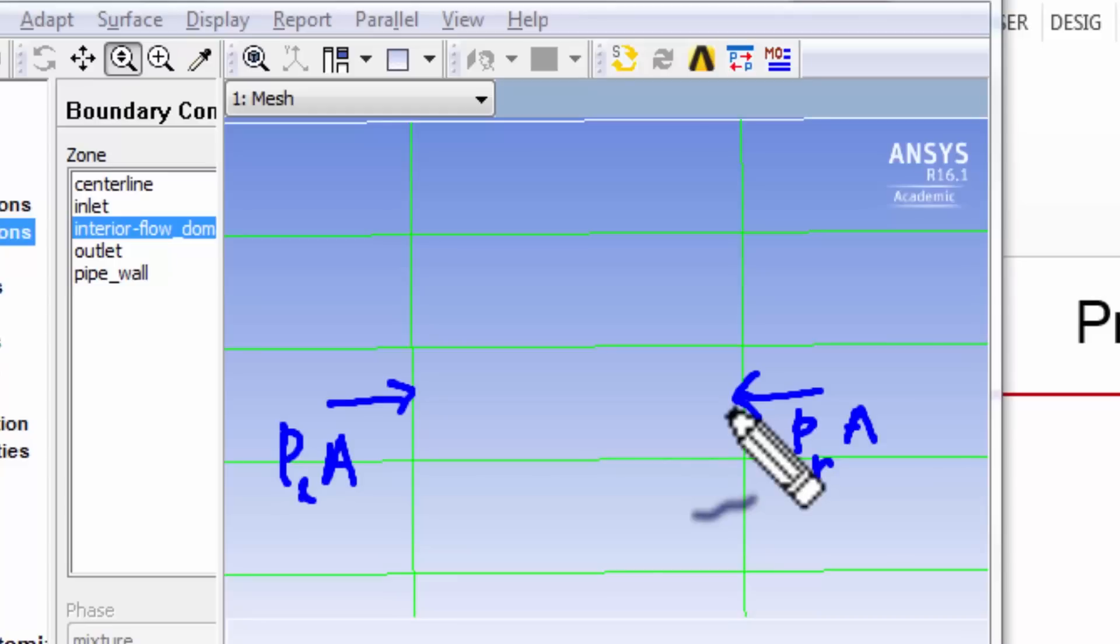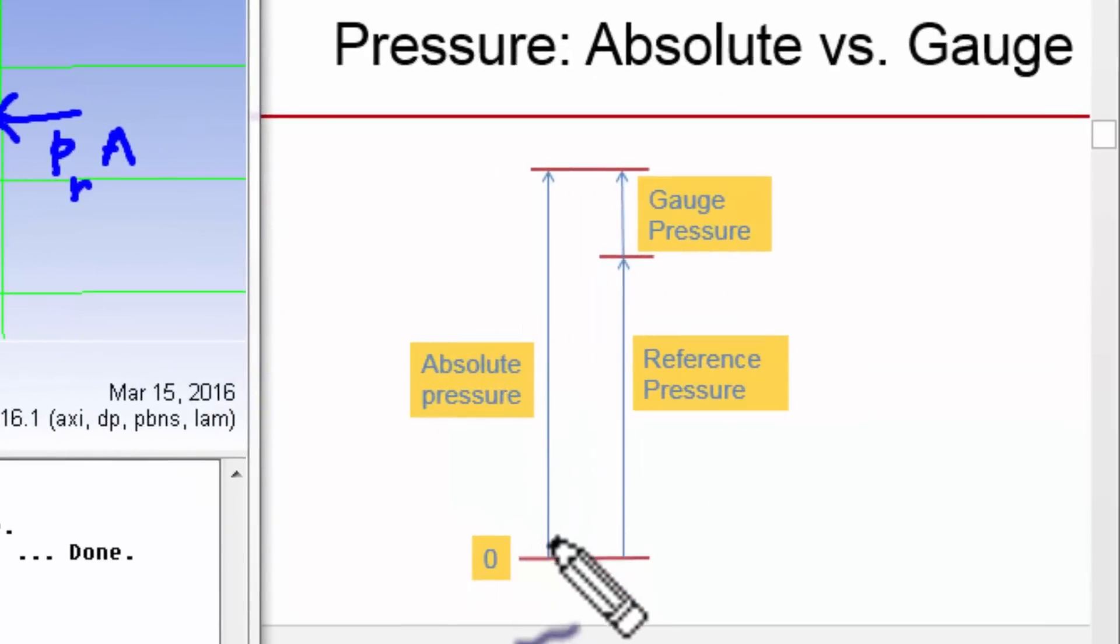And that leads to round-off errors, so-called round-off errors, because of the finite precision of the computer. So how do we get around this problem of having small differences of large numbers? It's done by working in terms of a gauge pressure. So you split the absolute pressure into a reference pressure plus a gauge pressure. And the reference pressure is picked by the user.